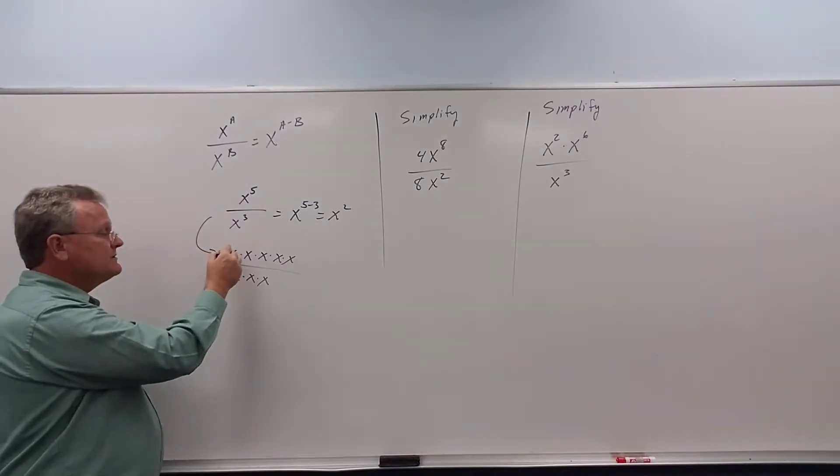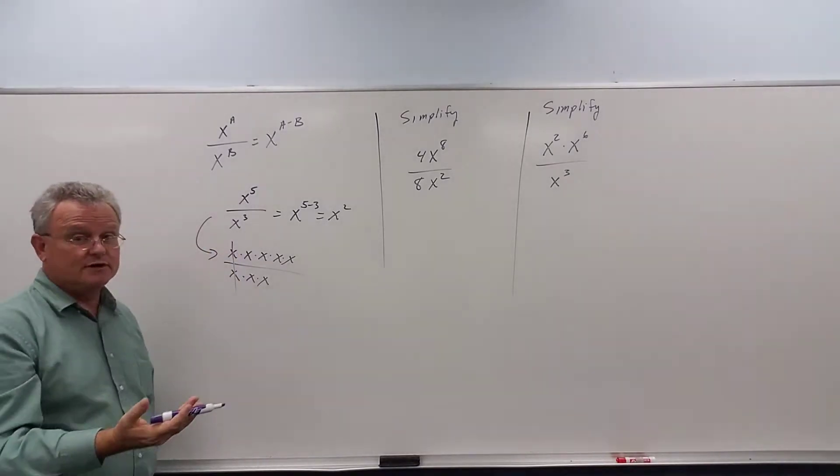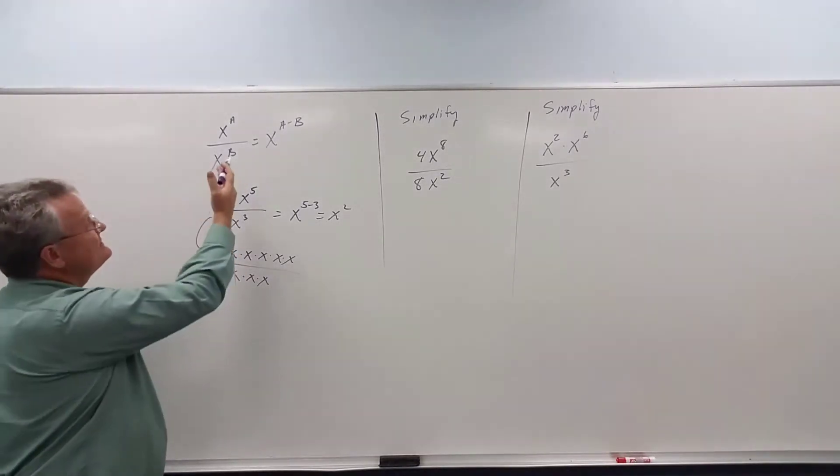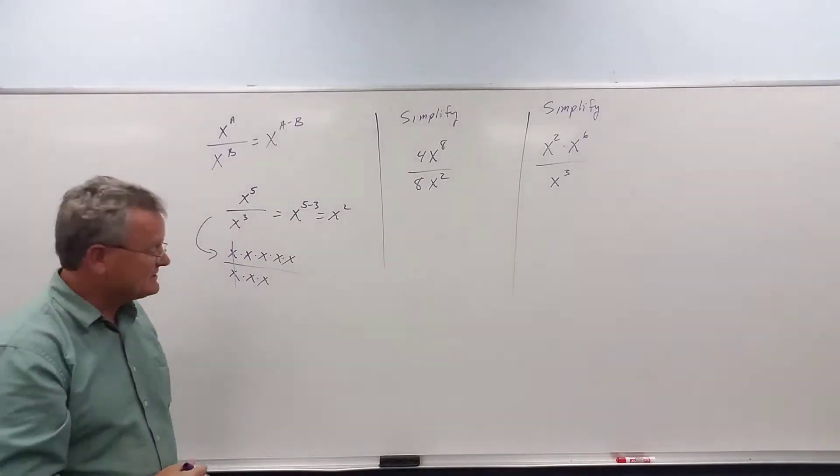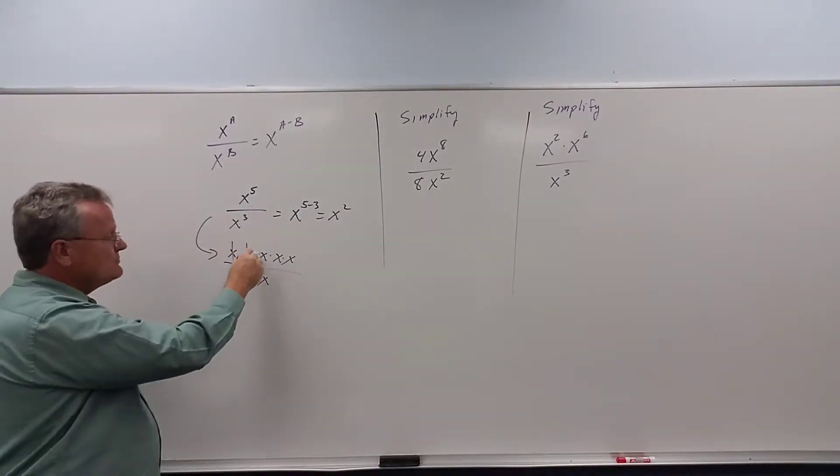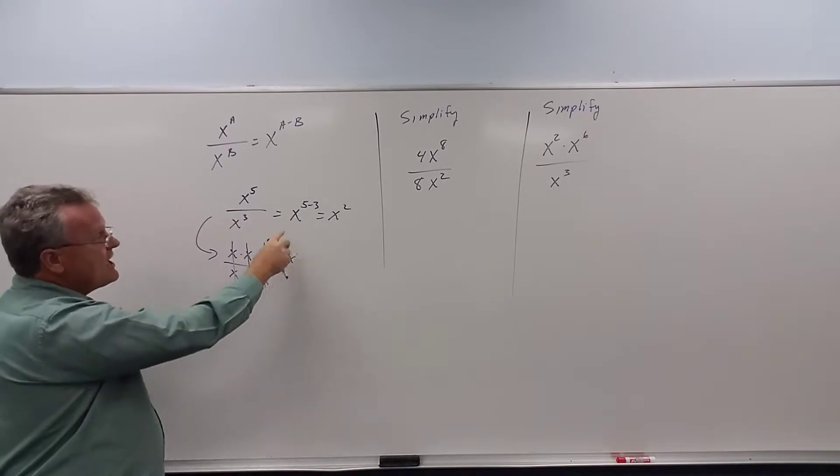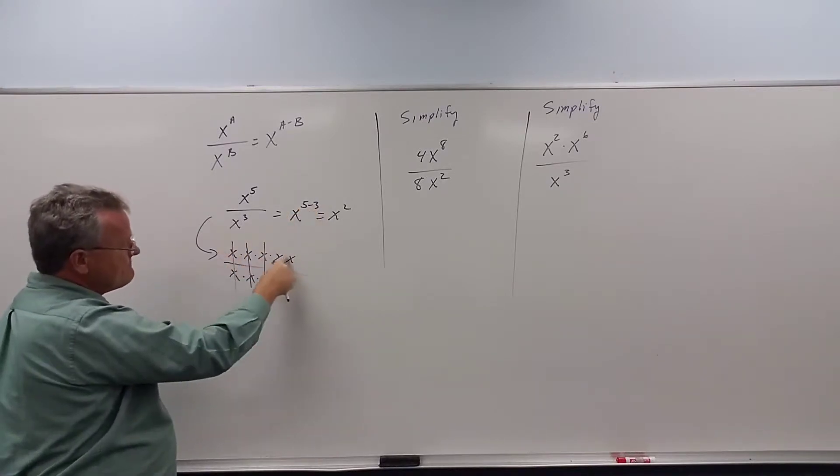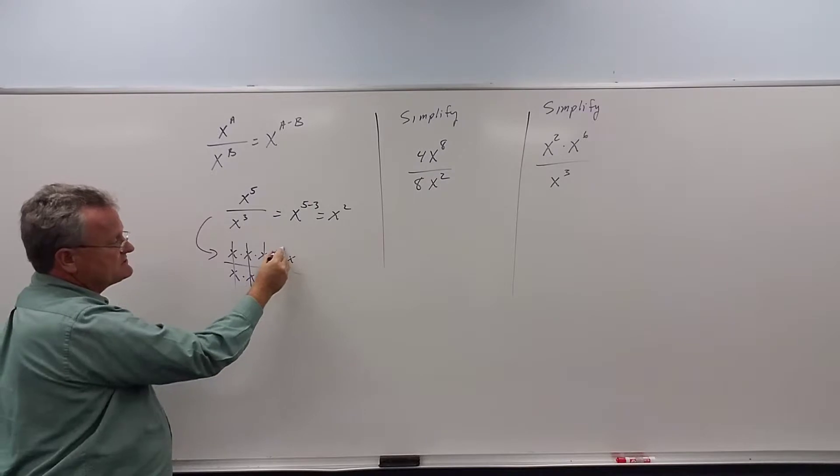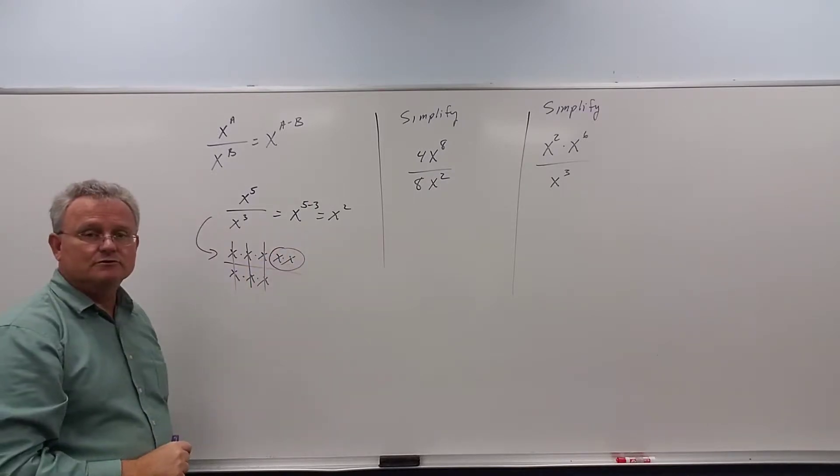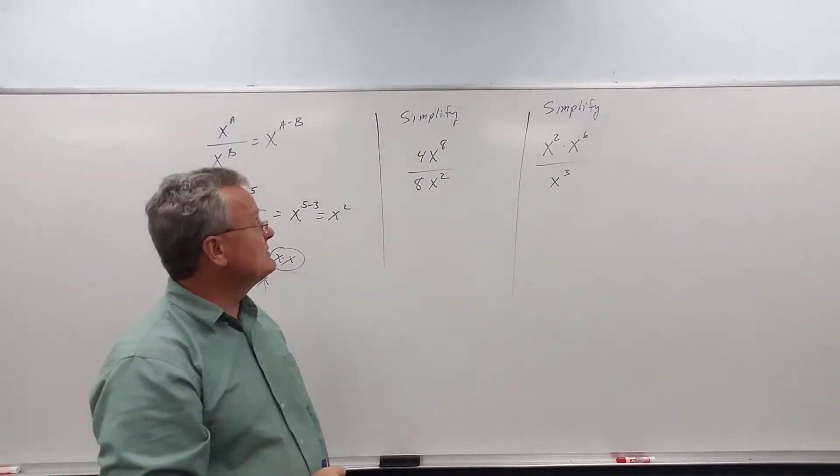When you cancel, what are we really doing? We're taking them away. In other words, we're subtracting. So I take 1 away, 2 away, 3 away. I'm taking 3 from the 5, which leaves us with x to the 2. So that's the reason why the rule works the way it does.